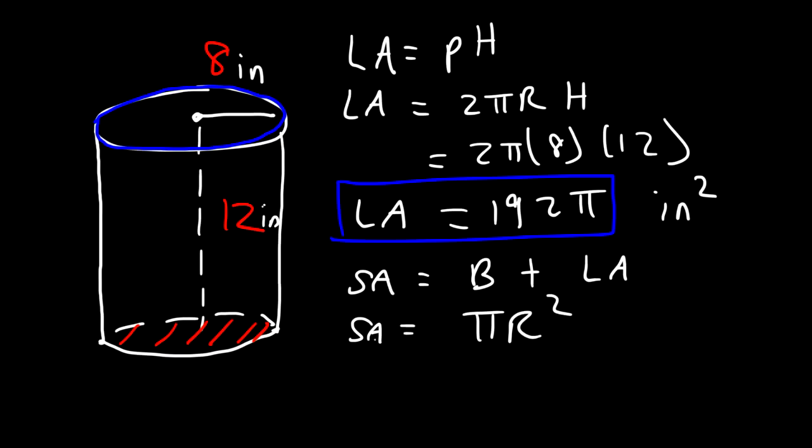But we have two circles, one at the bottom, one at the top, so it's going to be 2πr² and the lateral area is 2πrh. So the area of the base is going to be 2π times 8² and then the lateral area is 192π.